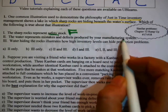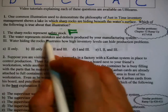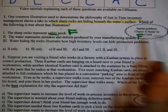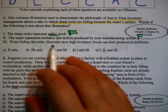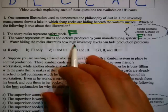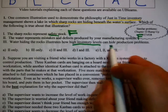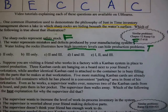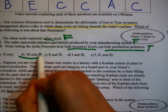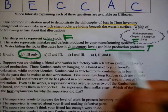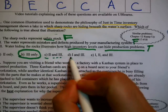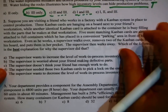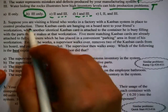The sharp rocks represent safety stock — that is false. Safety stock is inventory, so that's the water. The water represents mistakes and defects produced by your manufacturing system? No, those would be a really good example of sharp rocks, so we kick that one out. Water hiding the rocks illustrates how high inventory levels hide production problems — true. That's the whole point of the story, and only that statement tested true.